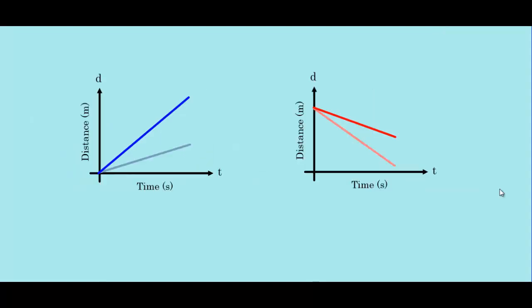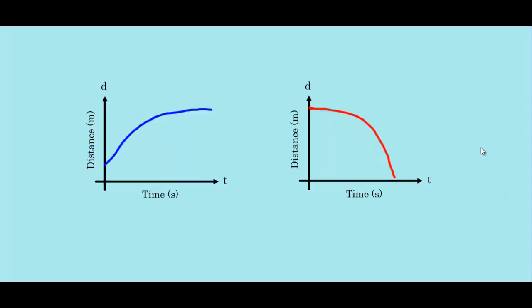The steeper the line, the faster you are moving, whether that's moving upwards or downwards. And a curve simply means that you aren't moving at a constant rate. You could still be moving upwards or downwards, but your speed won't be the same throughout the movement.